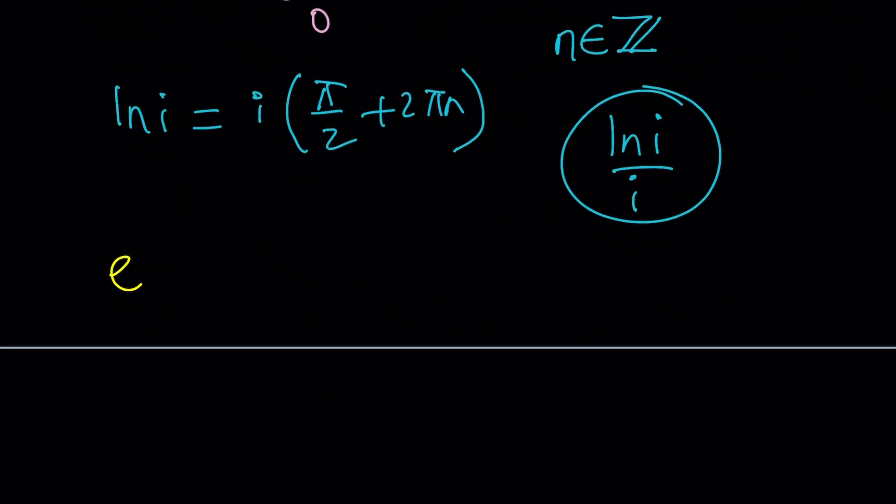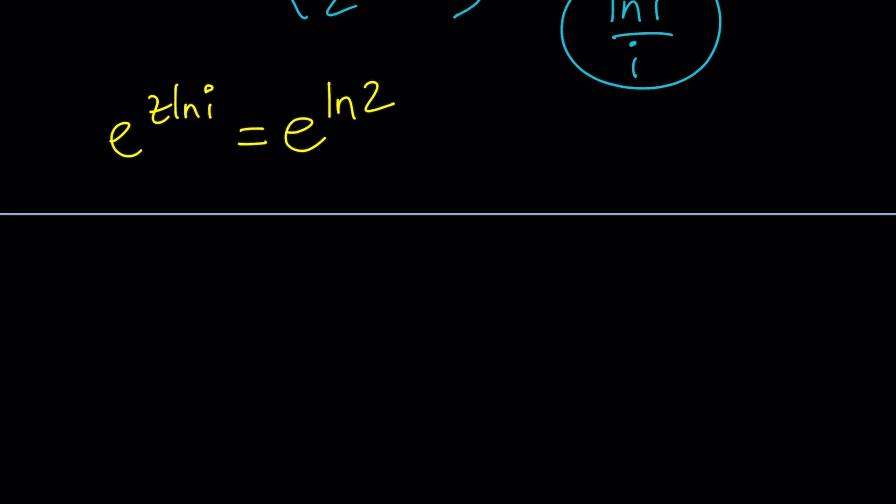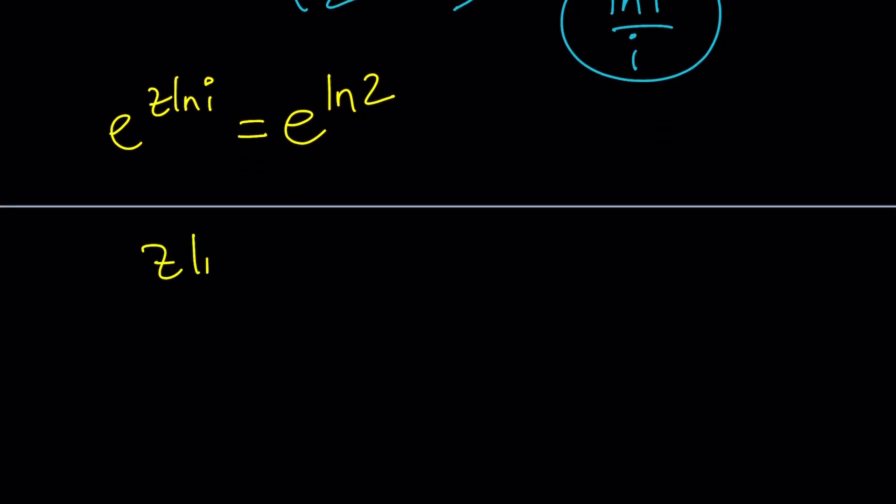I can write e to the power ln 2. I can replace 2 with that. And now, we have a nice expression, Z ln i equals ln 2 after natural logging both sides or just forgetting about the e's and focusing on the exponents.